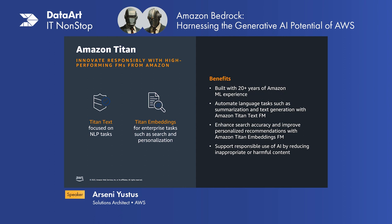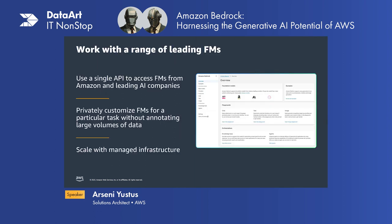Amazon Titan Foundation models are pre-trained by AWS on large datasets, making them powerful general-purpose models supporting a variety of use cases — you can use them as-is or customize them with your own data. Amazon Titan Text is a language model suited for open-ended text, brainstorming, summarization, code generation, table creation, data formatting, Q&A, and chat. Amazon Titan Embeddings translates text into numeric representations for semantic search, clustering, and retrieval augmentation. Titan FMs are built to detect and remove harmful content, reject inappropriate user input, and filter model outputs.